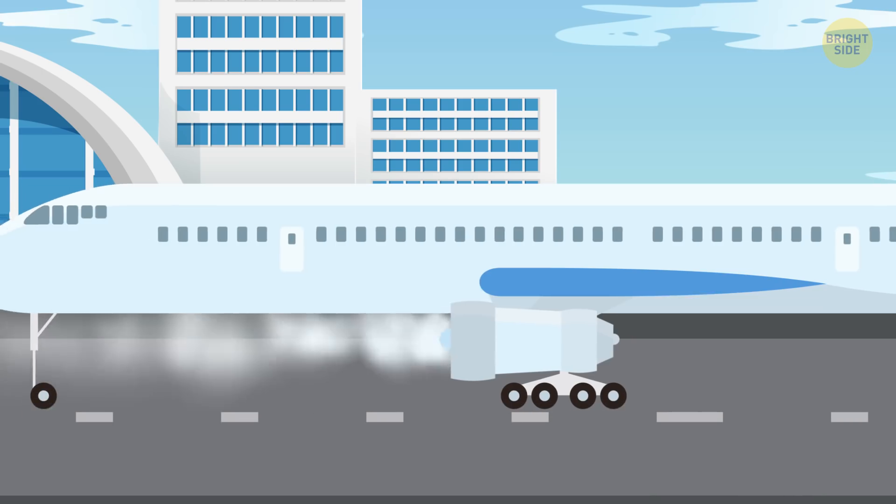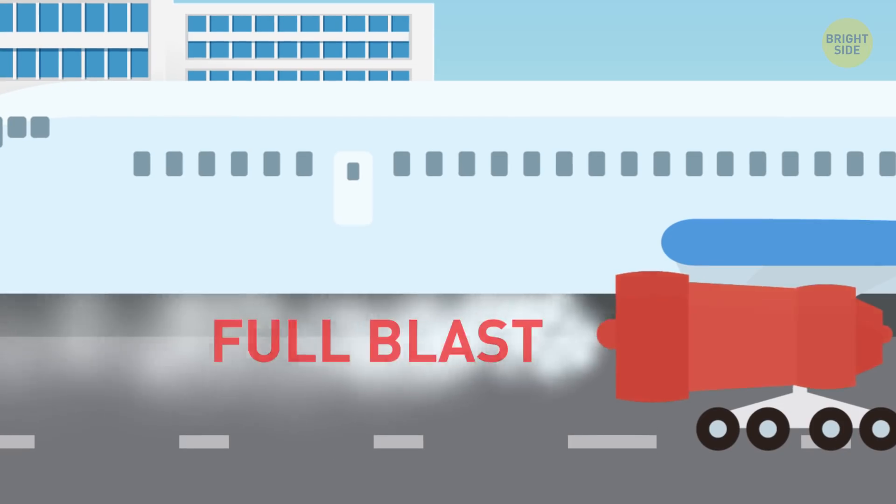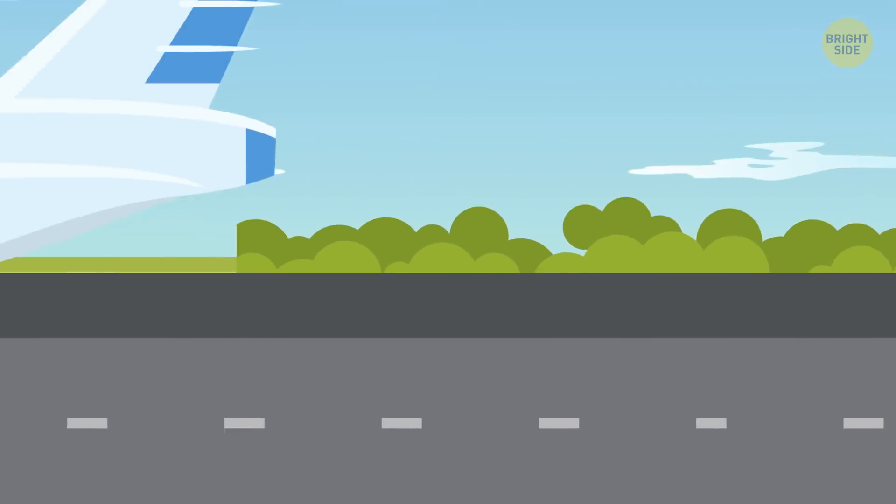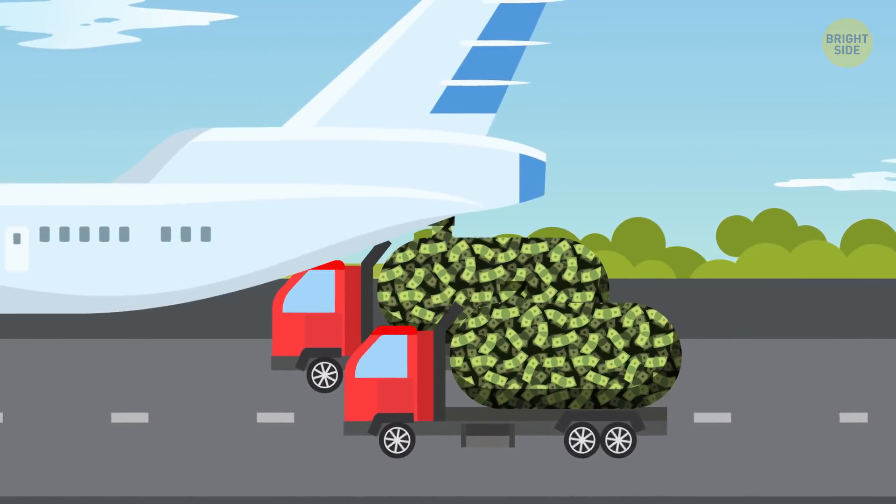On top of that, to make the reverse thrust as effective as possible, the plane's engines must work at full blast. But in this case, they spend much more fuel than usual, and more fuel means more money, way more money.